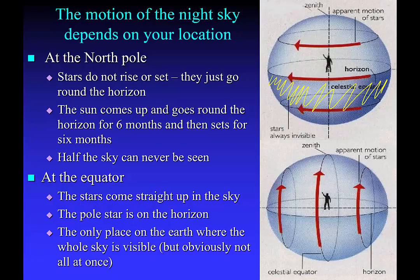At the equator, it's completely different. Somebody sitting on the equator doesn't see the stars moving around the sky in circles — instead, the stars come up straight up into the sky in the easterly direction, go right across the sky, and then drop out in a westerly direction. If you were at the equator, the pole star would actually be appearing on the northern horizon, right on the horizon. Whereas an observer at the North Pole would see the pole star directly above their head — that point directly above your head is called the zenith.